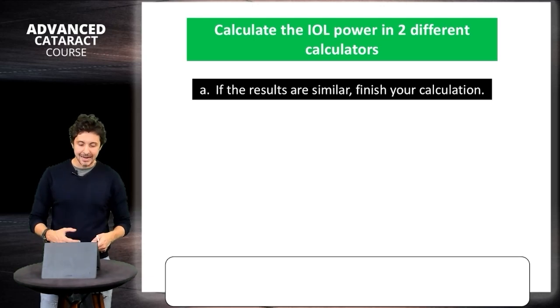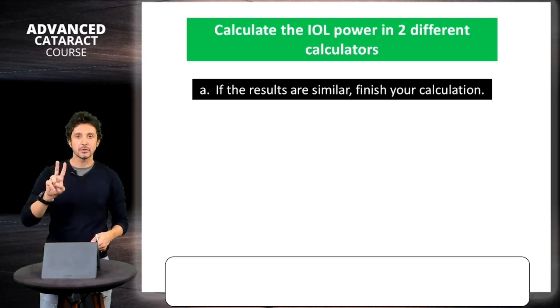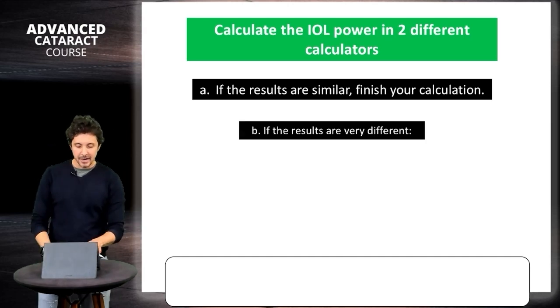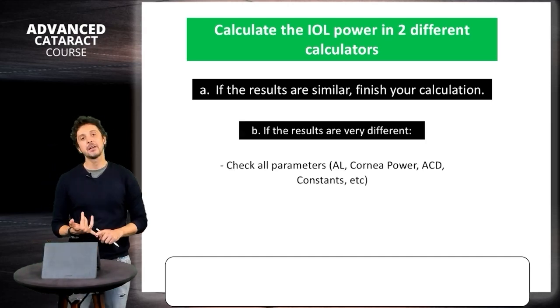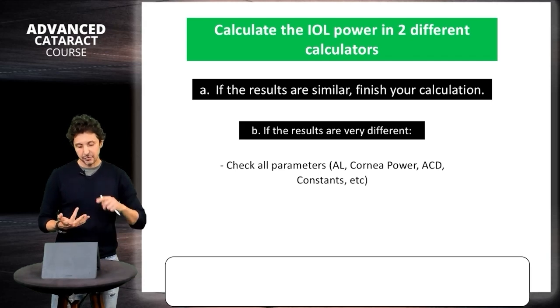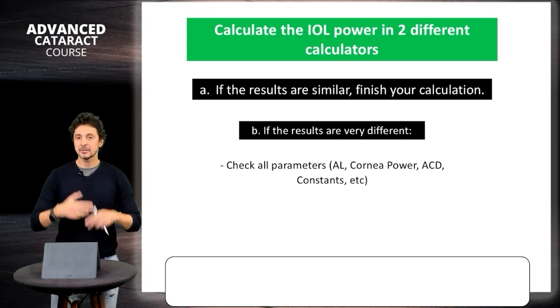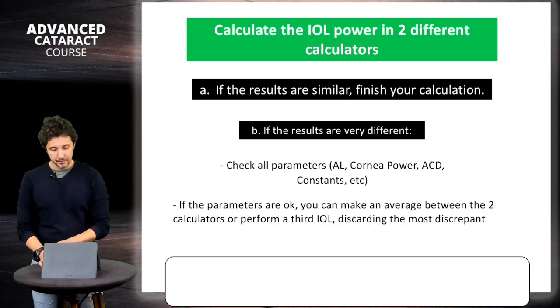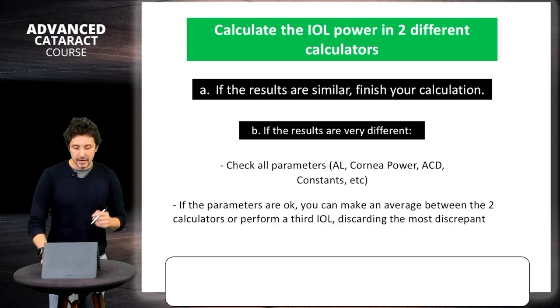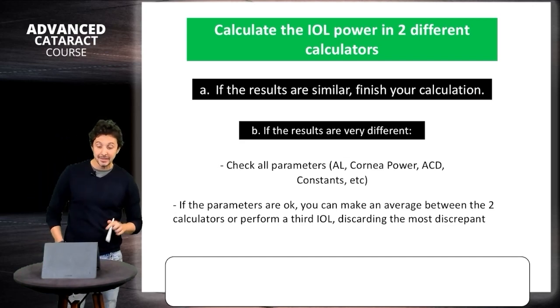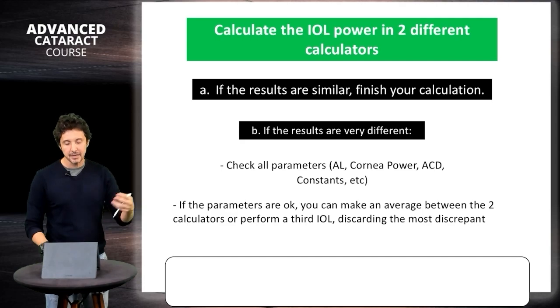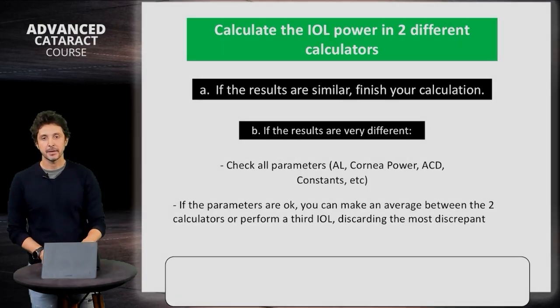If the results are similar in two calculators, finish your calculation. If the results are very different, check all parameters: axial length, corneal power, ACD constant, and any parameter that you need to check. If the parameters are okay, you can make an average between the two calculators or perform a third one, discarding the most discrepant.